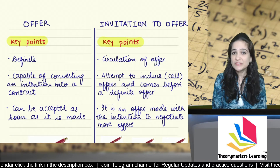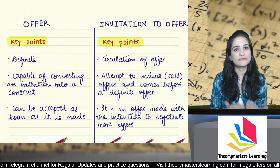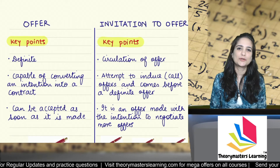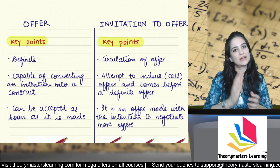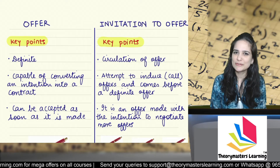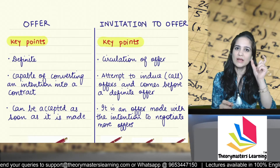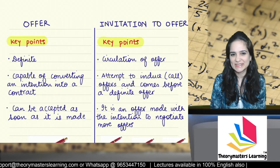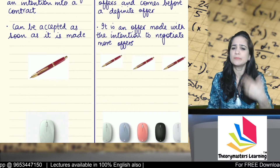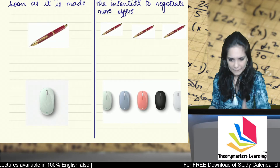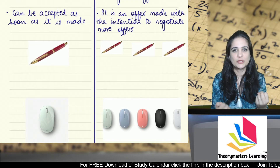Whereas in invitation to offer, it is only a circulation of offer. I am simply informing — I am expecting the offer from the other person. It is an attempt to induce; it is to call for offers. So invitation to offer comes before an offer: invitation to offer comes first, then someone gives the offer. It is made with the intention to negotiate more offers — I want to buy three pens or five mice, so tell me what price you will give. I am asking the other person to give the offer and negotiate.